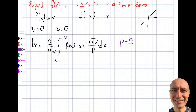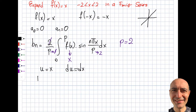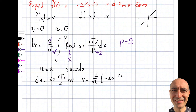Inserting p = 2, the 2/p factor simplifies, and the upper limit becomes 2. With f(x) = x, the integral is not too bad compared to what we've dealt with so far, but it does require integration by parts.